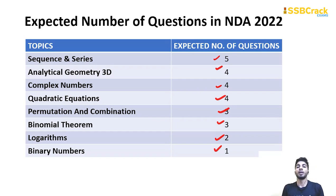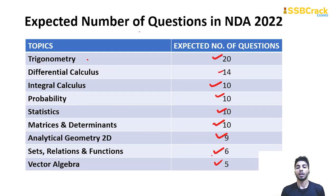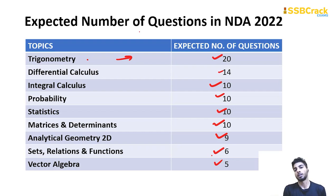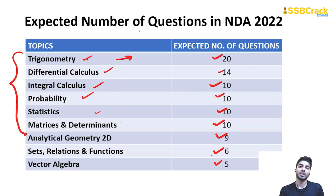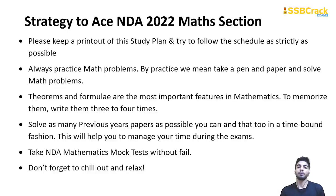These expected question counts are based on analysis of previous year patterns. While there may not be exactly 20 trigonometry questions, the range will be around 15 to 23. These are the important topics to focus on. If you don't have time for everything, just cover the top 5 to 6 topics — 70 to 80 percent of questions come from there.